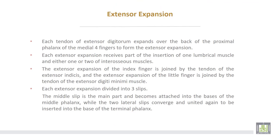Extensor expansion: each tendon of extensor digitorum expands over the back of the proximal phalanx of the medial four fingers to form an extensor expansion. Each extensor expansion receives part of the insertion of one lumbrical muscle and either one or two of the interosseous muscles. The extensor expansion of the index finger is also joined by the tendon of extensor indicis.